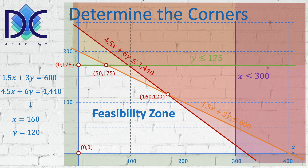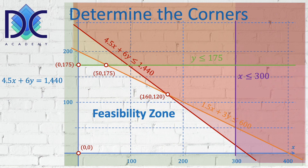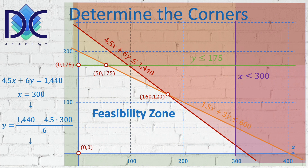We continue with the next corner point: the intersection of the red and purple lines, 4.5x plus 6y equals 1440 and x equals 300. Substituting gives y equals (1440 minus 4.5 times 300) divided by 6, so y equals 15. This gives us corner point (300, 15). The final corner point at the end of the zone is (300, 0).